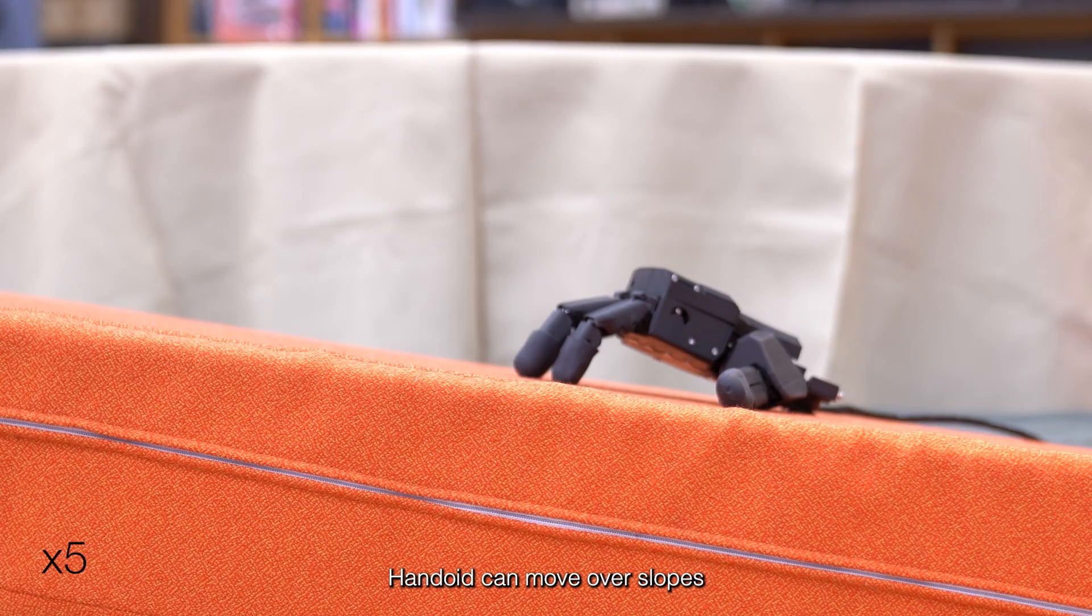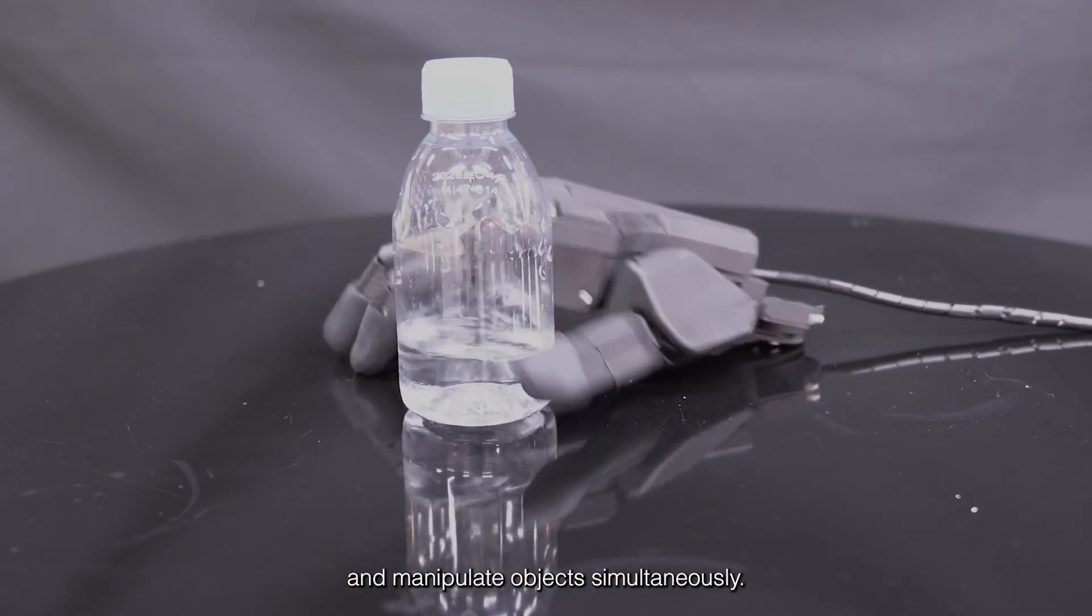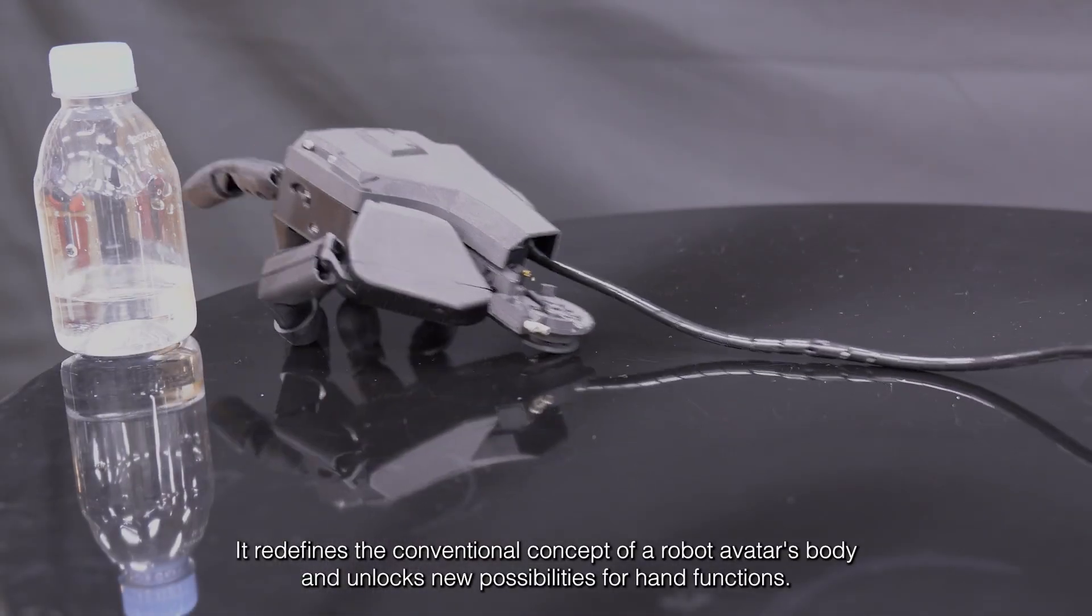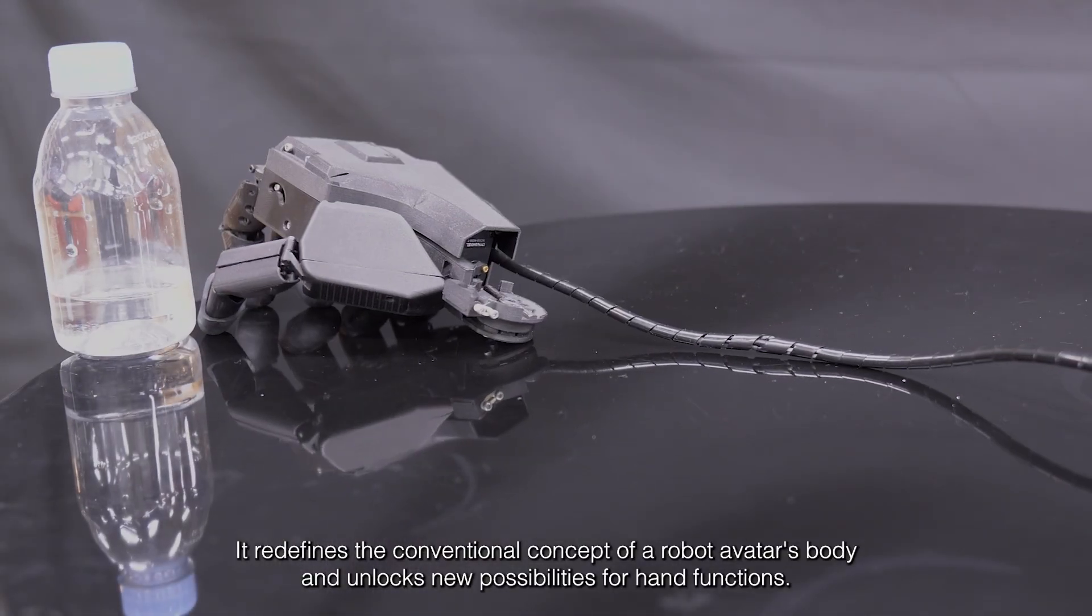Hangoid can move over slopes and manipulate objects simultaneously. It redefines the conventional concept of a robot avatar's body and unlocks new possibilities for hand functions.